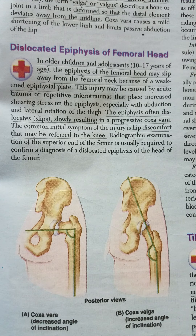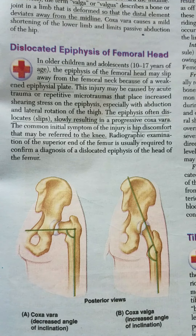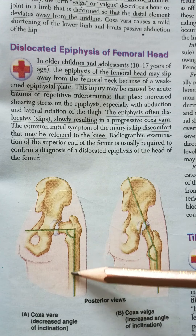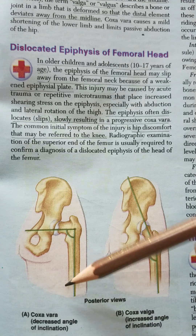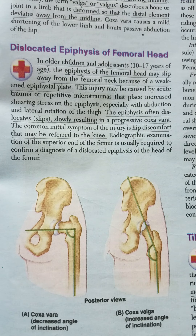Let's talk about a couple of conditions associated with the angle of inclination of the femur. These two conditions are known as coxa vera and coxa valga. Vera is a Latin term indicating a deformity in which the distal segment deviates towards the midline. So the angle of inclination, which is between the neck and the shaft of the femur, decreases, and the angle becomes more acute — usually less than 120 degrees.